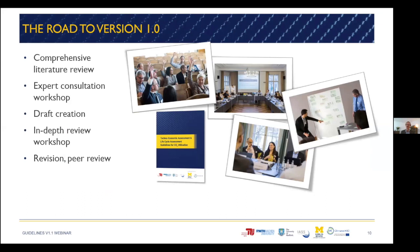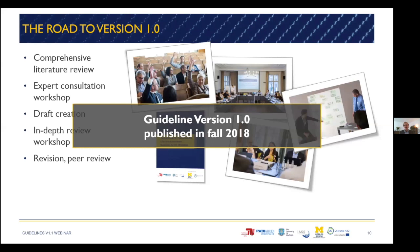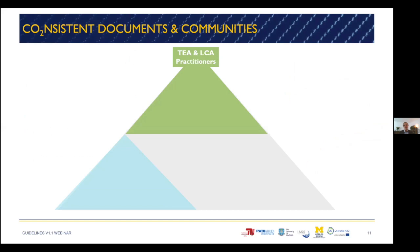To harmonize these assessment approaches, the Global CO2 Initiative and EIT Climate KIC organized a consortium to help create a first version of assessment guidelines. This consortium consists of RWTH Aachen University, the University of Sheffield, IASS Potsdam, and TU Berlin. We together started with a comprehensive literature review, followed by an expert consultation workshop to create a first draft. We then conducted an in-depth review workshop, revised the draft, and had it reviewed again. Overall, more than 50 global experts were involved in the workshops, reviews, and draft creation. The TEA and LCA guidelines for CO2 utilization were then published in fall 2018 — this is what we call version 1.0.